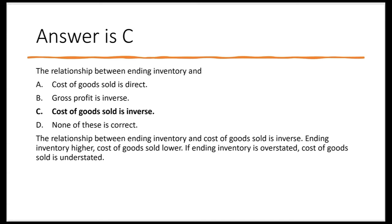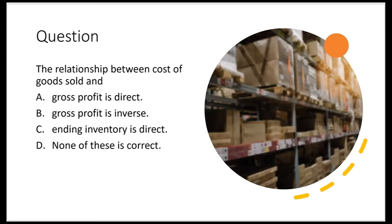Ending inventory higher, cost of goods sold lower. If ending inventory is overstated, cost of goods sold is understated. And what would that do to gross profit? Gross profit would be overstated. Now another question: is the relationship between cost of goods sold and gross profit direct? No, the relationship between cost of goods sold and gross profit is inverse. If cost of goods sold is overstated, gross profit is understated.